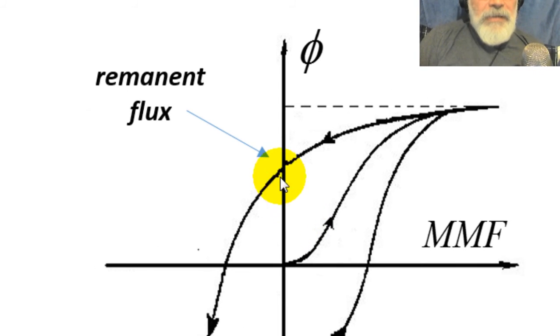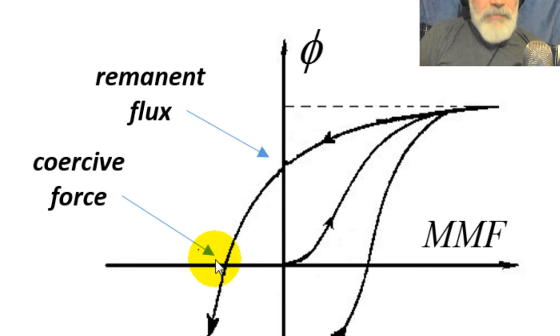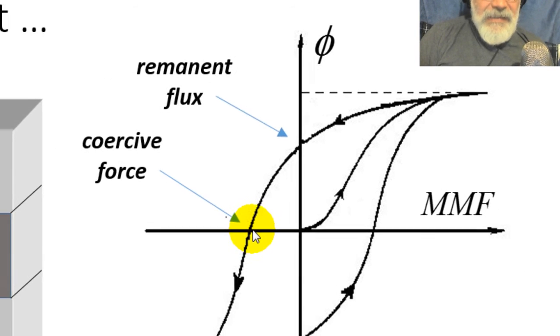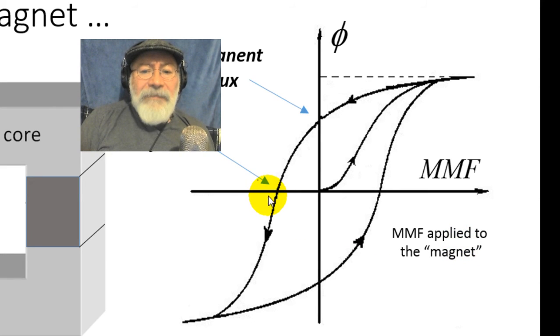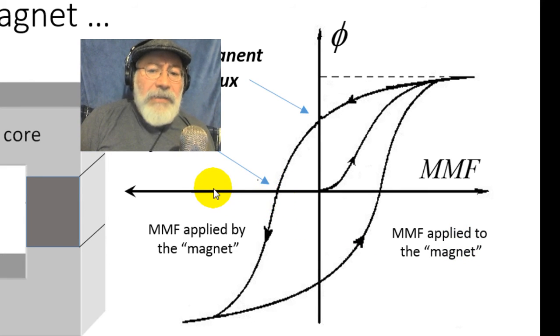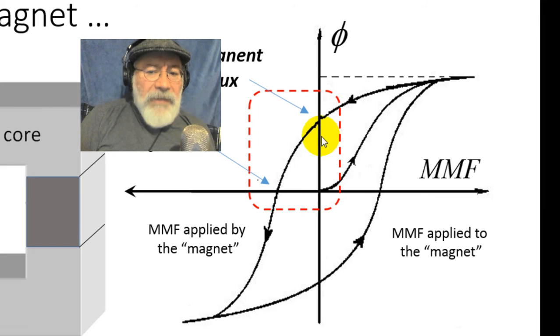At that point there is known as the remnant flux. And if we wanted to demagnetize that piece of iron, we would have to apply a negative MMF with the current in the coil all the way down to this point, the coercive force. At this point, the flux in the circuit is zero. The piece of iron on the right has been demagnetized. On the right, magnetomotive force applied to the magnet. On the left, the one who supplied the MMF actually is the magnet itself. This is the area that will be of interest to us when we analyze the behavior of the magnet.